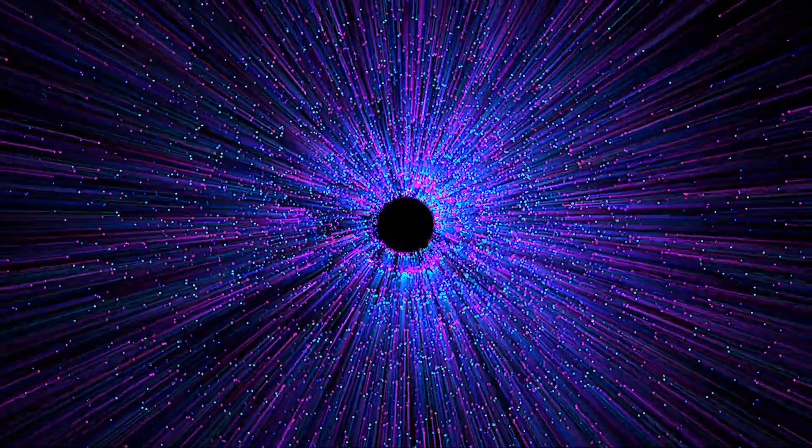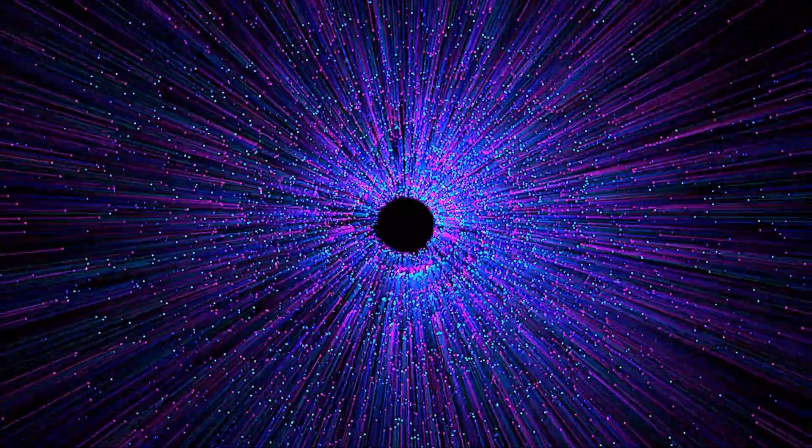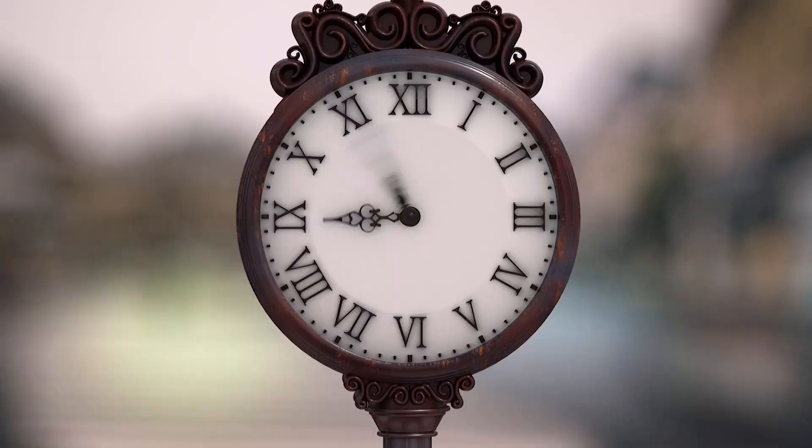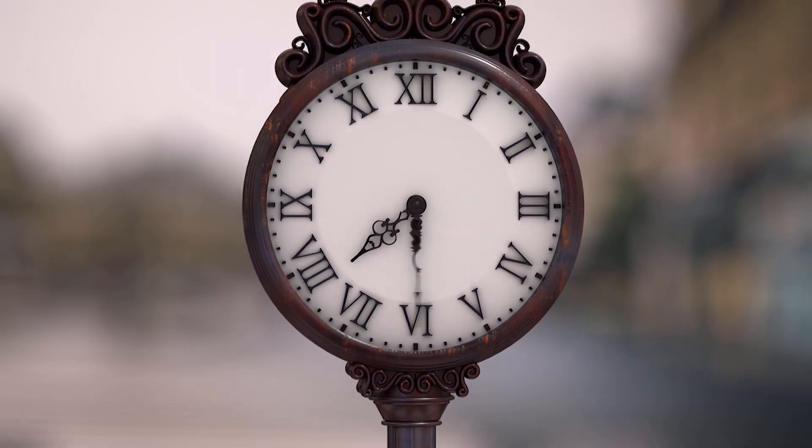A black hole's extreme gravitational pull would increasingly slow down time and warp space around it. As objects reach the event horizon, they move close to the speed of light due to the strong gravitational force from the black hole. And the faster you move, the slower time passes for you.